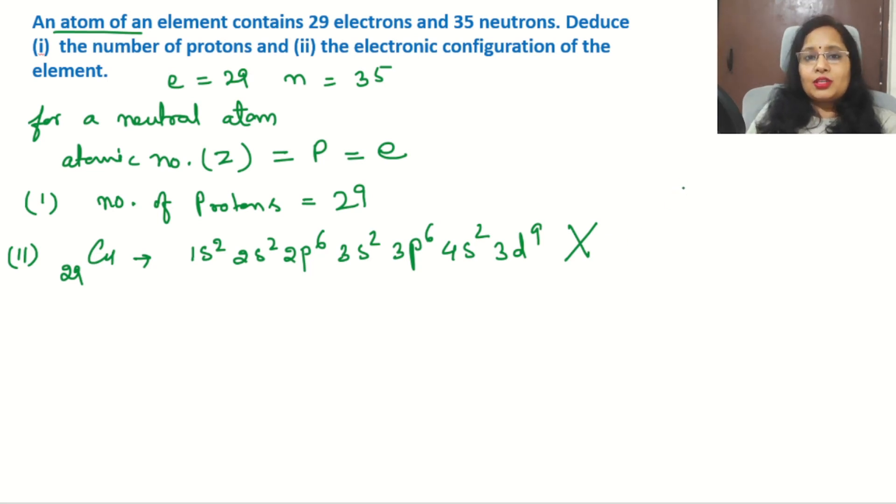Because here in this case 3d subshell contains 9 electrons. And as we know, the d subshell has five orbitals. So the orbital is stable when all five orbitals have one electron or all five orbitals have 10 electrons. These two cases will be there, then the d orbital will be stable.